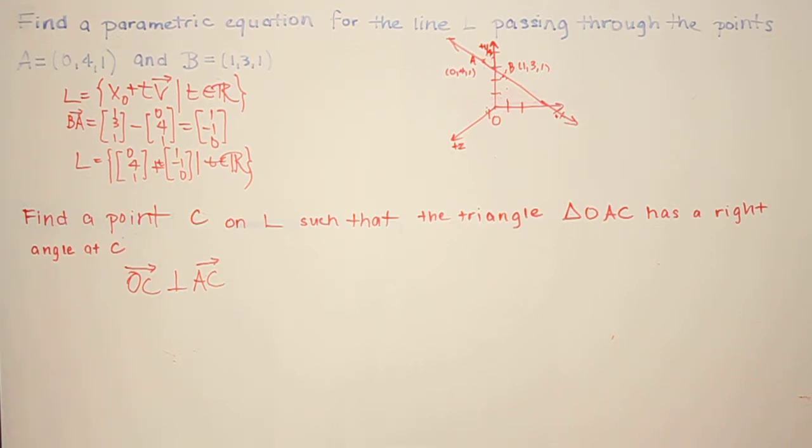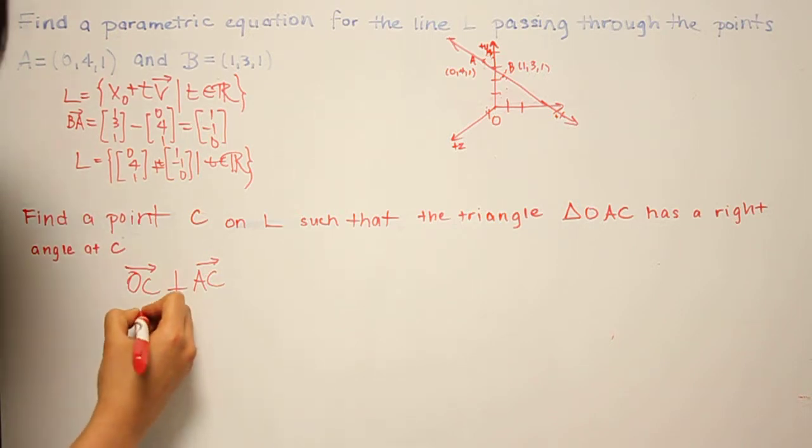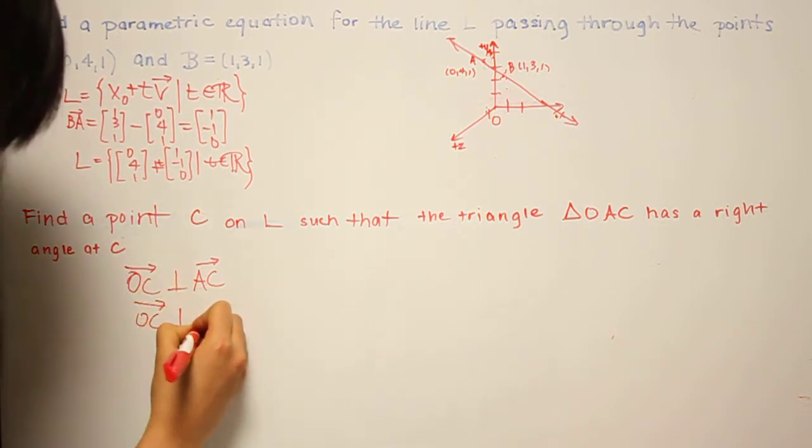Now, since we know A, B, and C are all on the same line, AC and AB are scalar multiples of each other. So this is the same thing as saying OC is perpendicular to AB.